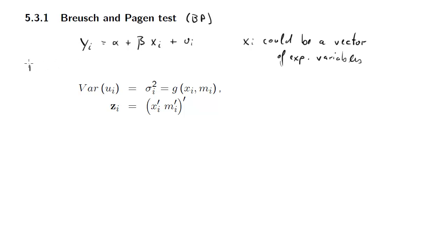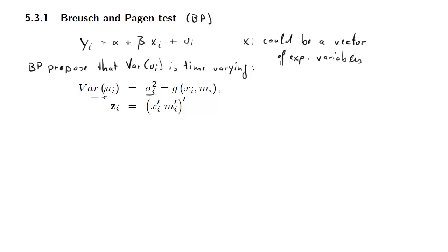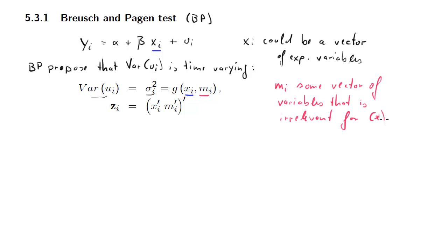The important thing is to recognize that what Breusch and Pagan propose is that the variance of the error terms Ui can change. They can be time-varying if you have time series data, but they could just change across observations — that's important. And they could change as a function, a generic function G, of Xi, the variable that's in our regression model, but also potentially of another variable Mi.